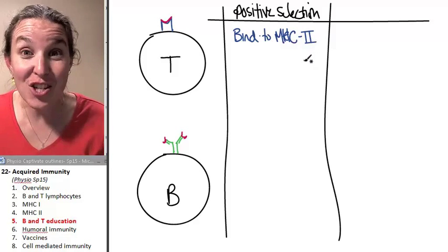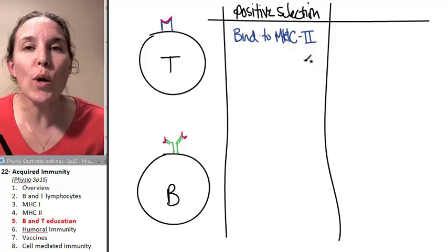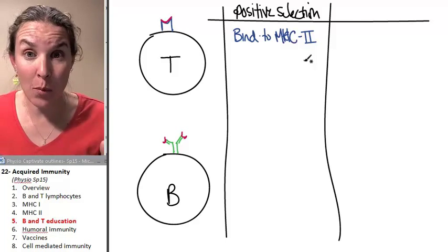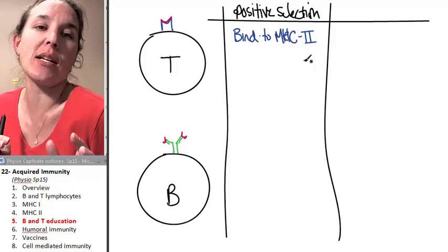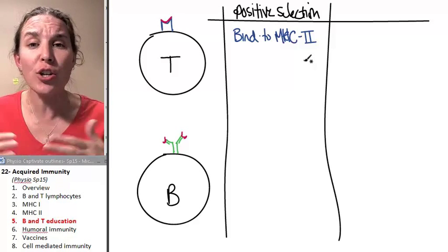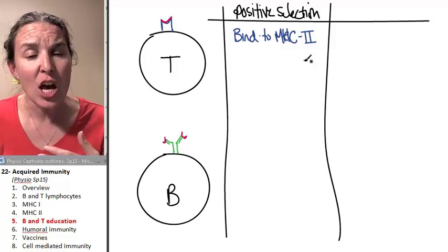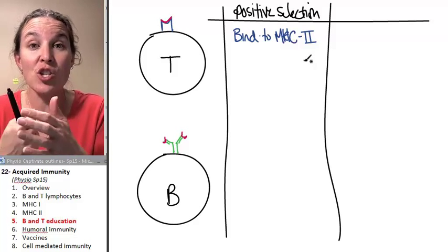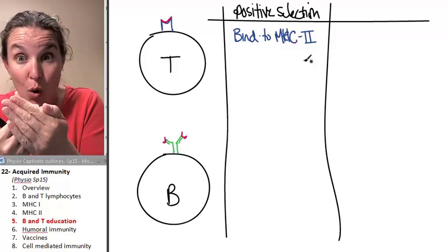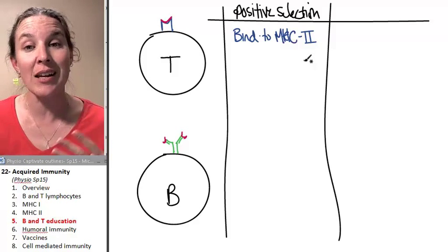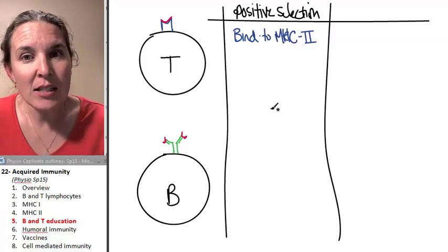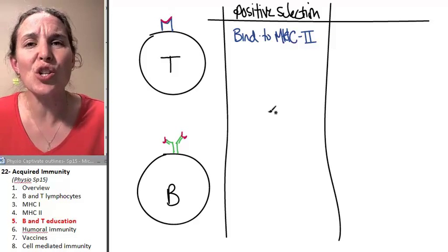The antigen presenters. If you can't bind to someone's MHC-II platform, if you can't get close enough to make contact, you're never going to be able to be activated. Remember how I said they all have to bind on an MHC-II platform in order to be activated. Positive selection means you can do it.